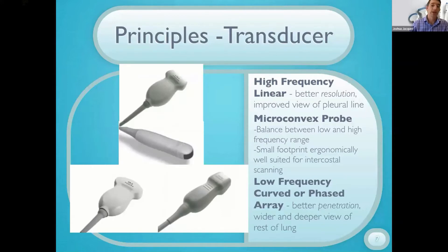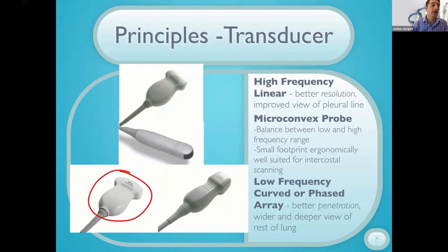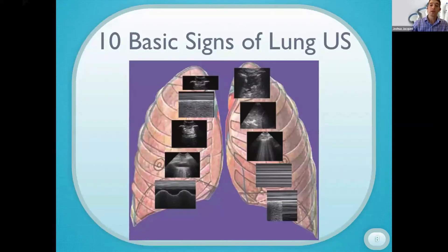The transducer you use may differ. One of the most common mistakes I see is people only using the high-frequency linear probe for lung ultrasound. If you're going to pick one probe, pick the curvilinear — the low-frequency probe. The high-frequency linear has good resolution for evaluating the pleural line but doesn't have sufficient penetration to review the rest of the lung. Some experts recommend the microconvex probe for its balance between low and high frequency in a small footprint, but most places combine the curvilinear and the linear to get the information they need.